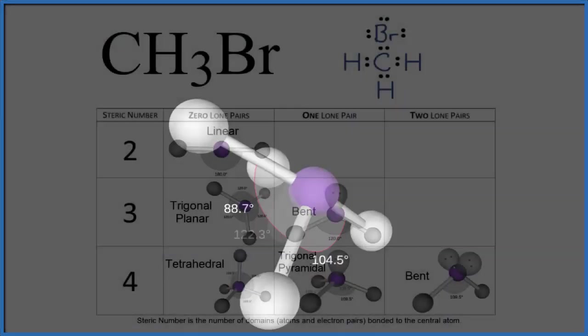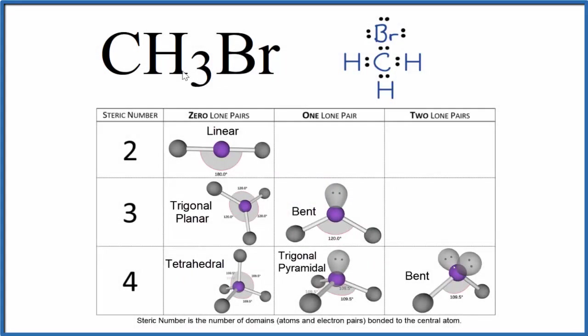Let's go back to our Lewis structure. Final way to look at the molecular shape or geometry for CH3Br is the AXE notation. A, that's the central atom, the carbon. X, that's the number of atoms attached. We have one, two, three, four.